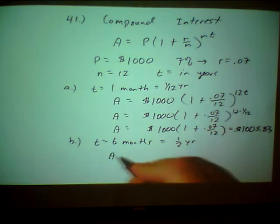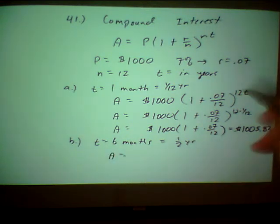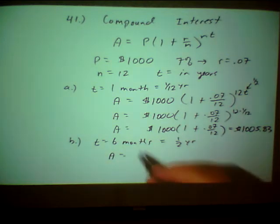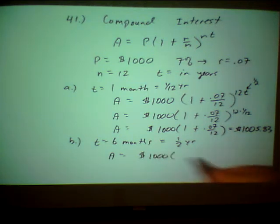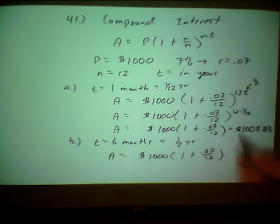I'm not going to rewrite the whole equation. I go back up here. And now, for T, I simply put in one half. And now I definitely am going to have to use my calculator, because here's what I'm going to have, 1,000 times in parentheses, 1 plus 0.07 over 12. 12 times one half is six. All of that raised to the sixth power.